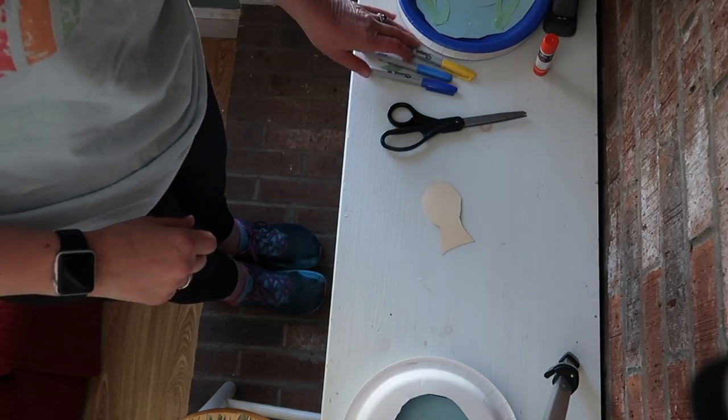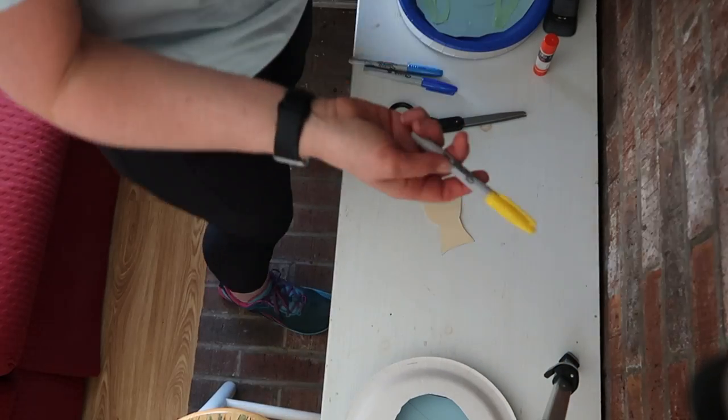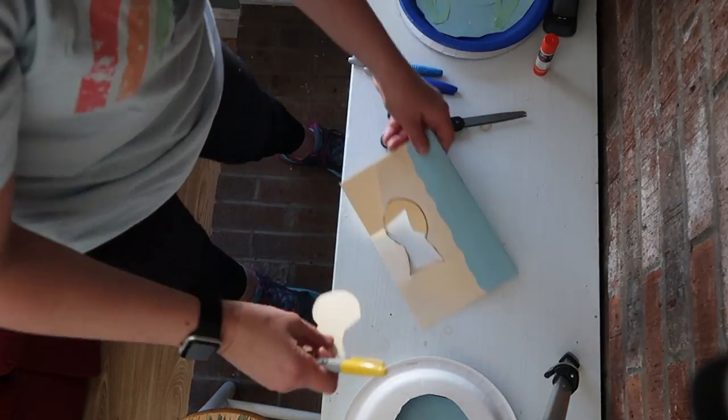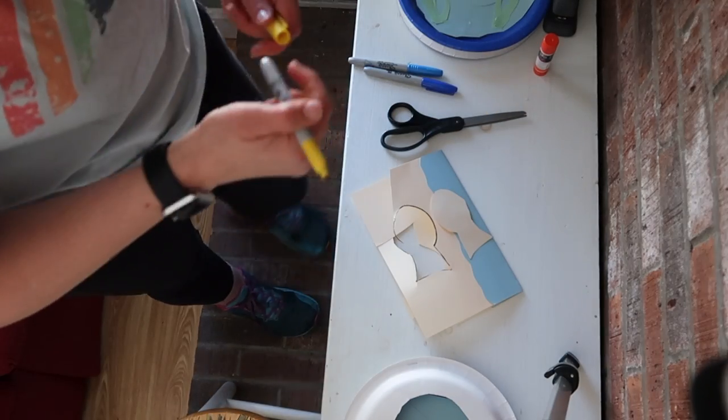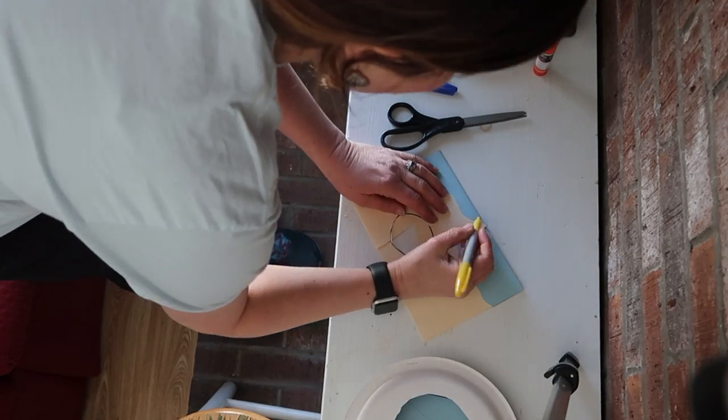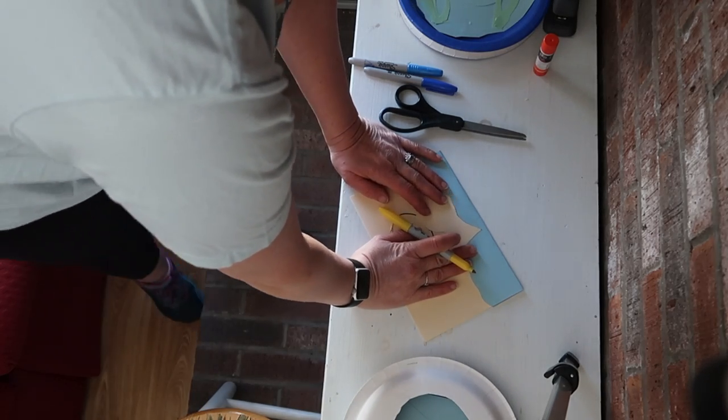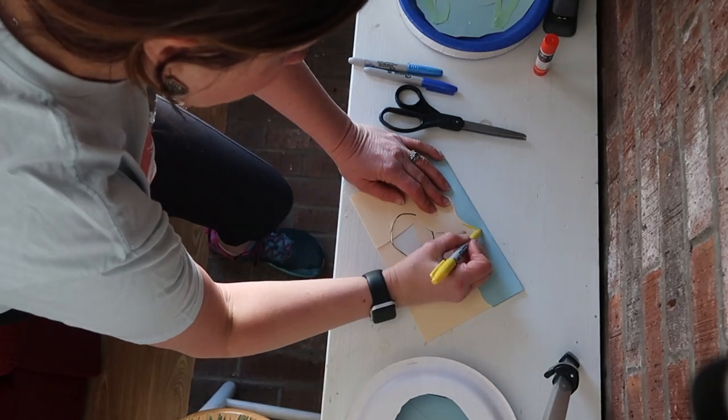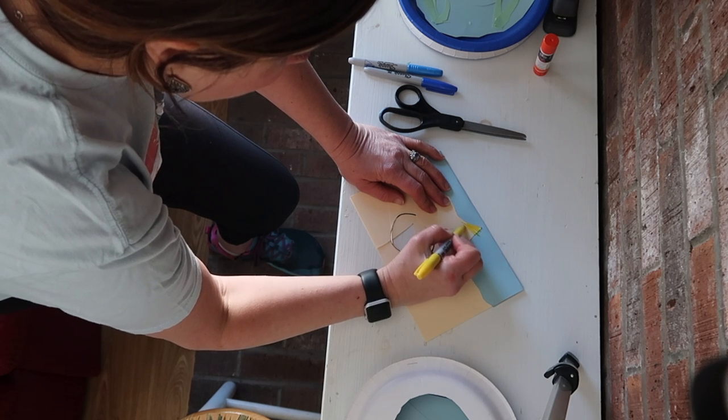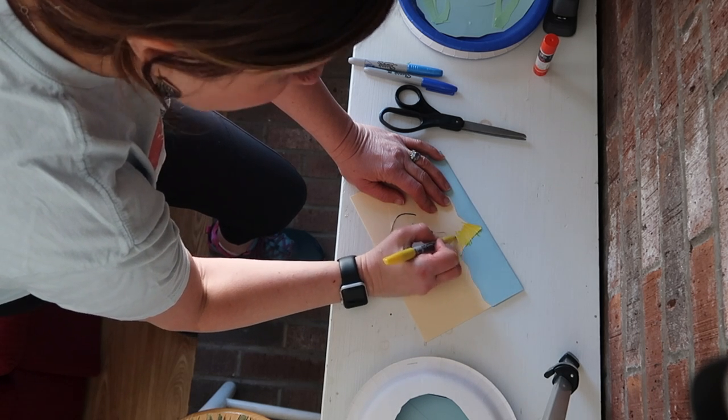There we have Dory ready to color in. Now because like I've said in my past videos, all we have are Sharpies. I do not recommend them. I'm going to color Dory in over the paper, which is always a good idea anyways, washable markers or not, just to make sure you're not getting marker all over your table.